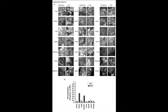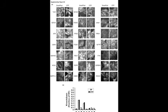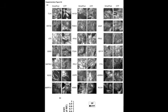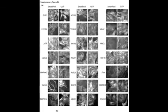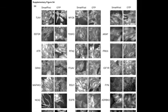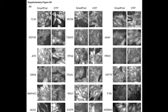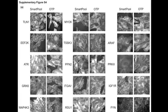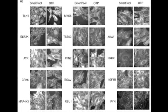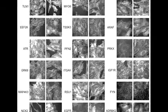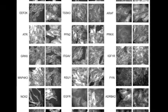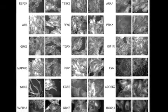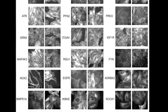To better understand focal adhesions, Geiger and his team recently completed a high-throughput visual screen using siRNAs to individually knock down genes known or suspected to be involved in migration and adhesion. The siRNA approach helps us deal with the molecular complexity, and the multi-parametric approach of analysis helped us greatly in dealing with the diversity of physiological responses to the modulation of adhesion sites.